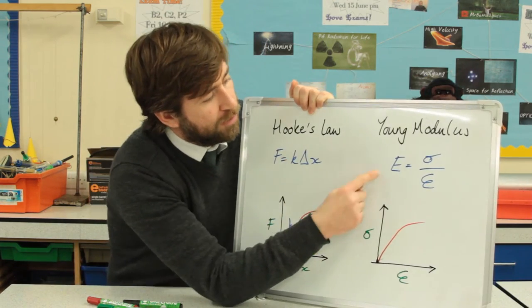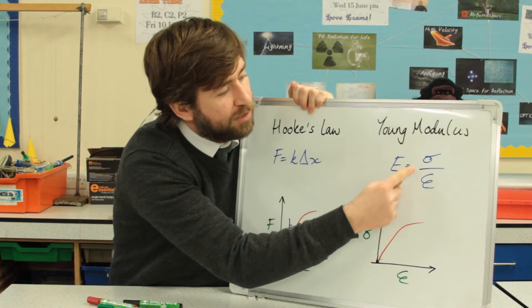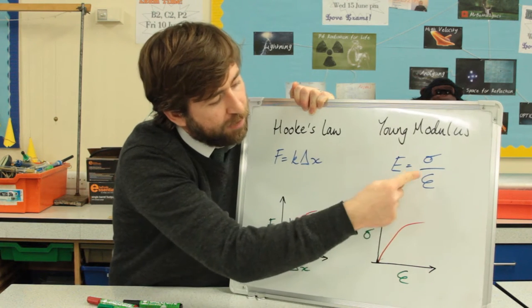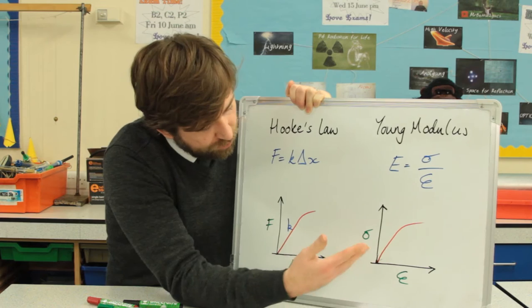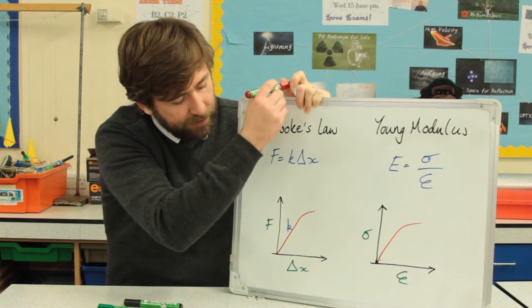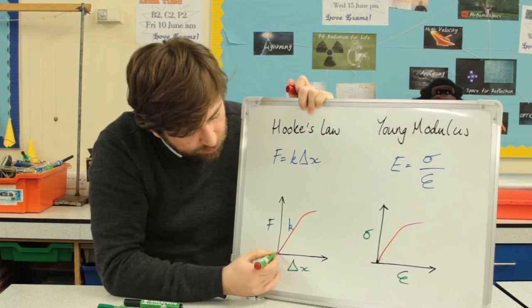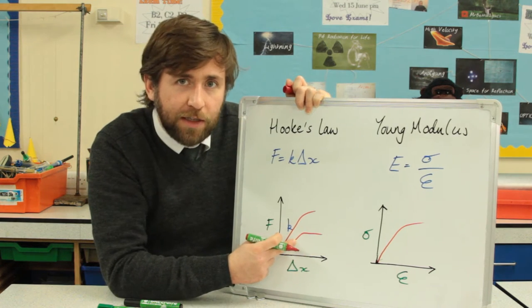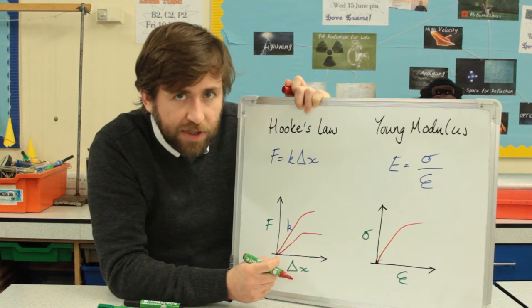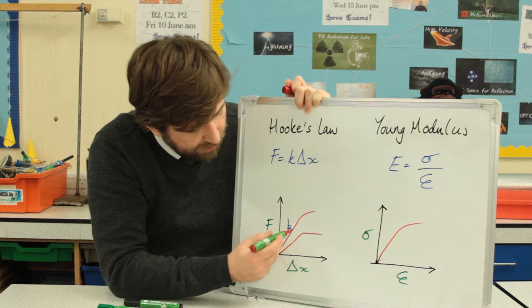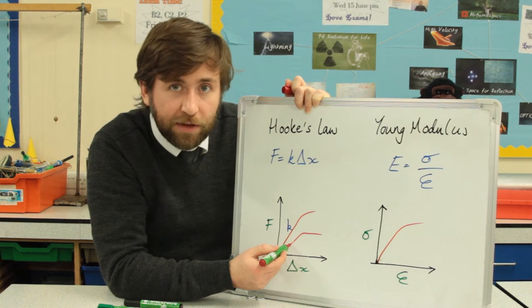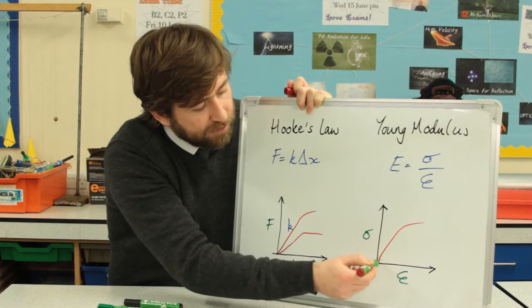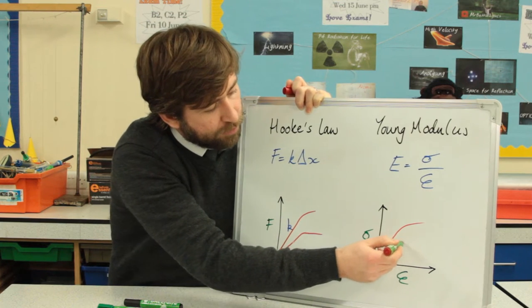So simply put, Young Modulus is the ratio of stress to strain, and we're going to be defining those two. Still, what you know applies to it from Hooke's Law: the steeper the line, the stiffer the spring, so this has a higher stiffness than this one. That is still the same when we look at a Young Modulus graph.